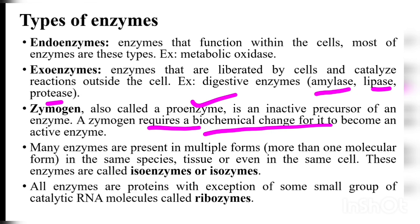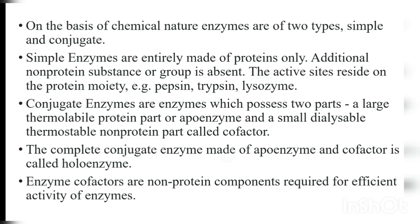Many enzymes are present in multiple molecular forms in the same species — these are called isoenzymes. All enzymes are proteins, with the exception of some small groups of catalytic RNA molecules called ribozymes. On the basis of chemical nature, enzymes are of two types: simple and conjugate. Simple enzymes are entirely made up of proteins, with no additional non-protein substance. The active site resides on the protein moiety. Examples: pepsin, trypsin, lysozyme.